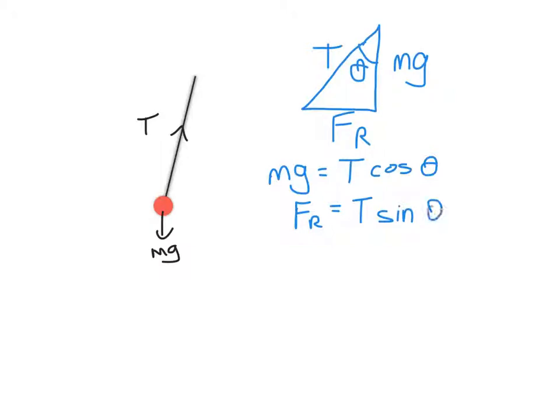If I wanted to then find what FR is, that would be T sine theta. Now what we're going to use is a trig identity here, which is that sine of theta divided by cos of the same theta is always equal to tan theta. So what I can do is, if I divide my first equation by my second equation,